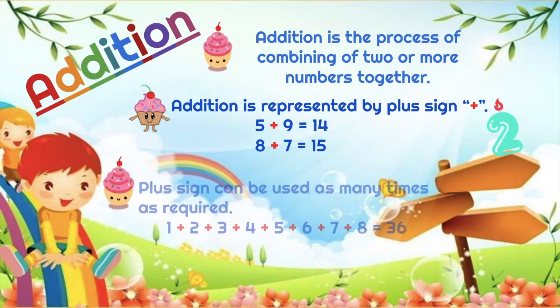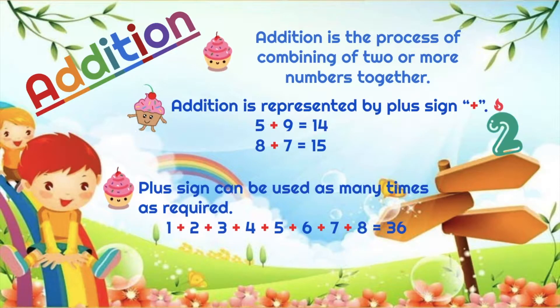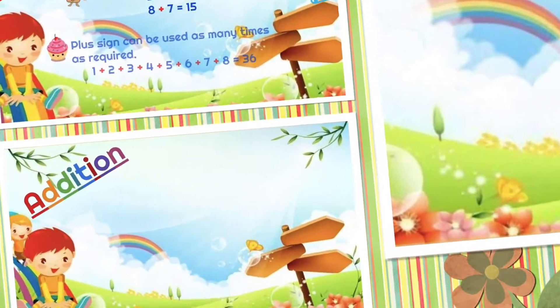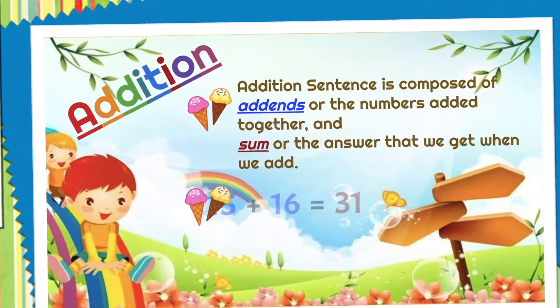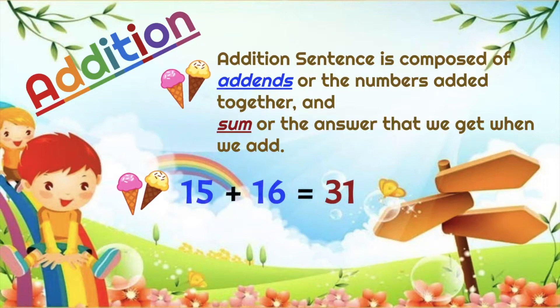Plus sign can be used as many times as required. Addition sentence is composed of addends, or the numbers added together, and sum, or the answer that we get when we add. In the example below, 15 and 16 are the addends, while 31 is the sum.